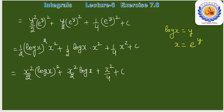In terms of x: y = log x → y² = (log x)², eʸ = x, e²ʸ = x²। Final answer: x²/2·(log x)² − (x²/2)·log x + x²/4 + C। यही question number 14 का final answer है।